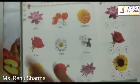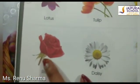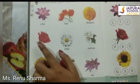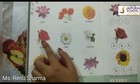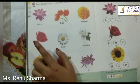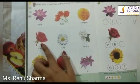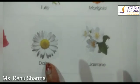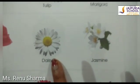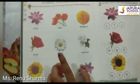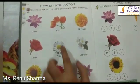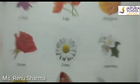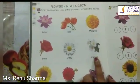Now we will come to rose. Which flower is this? This is rose. It has thorns in its stem, and rose flowers have a very pleasant smell. Now we will come to daisy flower. Which flower is this? Daisy. It is a white flower with a yellow disc center. Have you seen this?